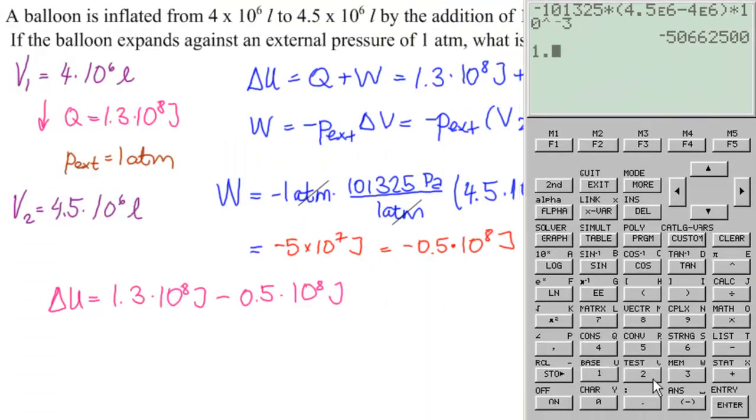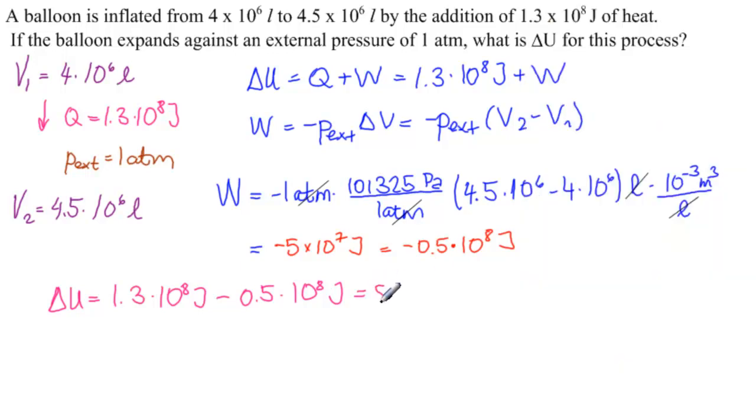So 1.3 EE8 minus 0.5 EE8 equals 1, 2, 3, 4, 5, 6, 7 equals 8 times 10 to the 7 joules or 0.8 times 10 to the 8 joules if we want it in the same units as was given.